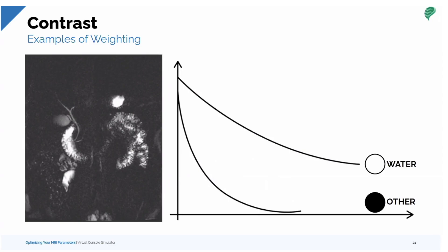This example is an MRCP of the abdomen — the biliary tree, gallbladder, and bile ducts. It's very heavily T2 weighted, with TEs sometimes of 800, 900, even 1,000 milliseconds at 1.5T. Nearly all other tissues get saturated or suppressed except water, which has a much higher T2 relaxation time. All other tissues have decayed to zero, but water remains bright, allowing us to see fluid in the gallbladder, bile in the biliary tree, pancreatic duct, and bowel. Sequences used include single-shot fast spin echo on GE or HASTE on Siemens, done in 2D and 3D.